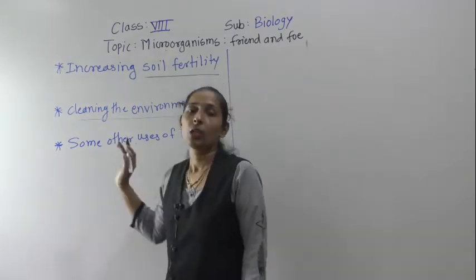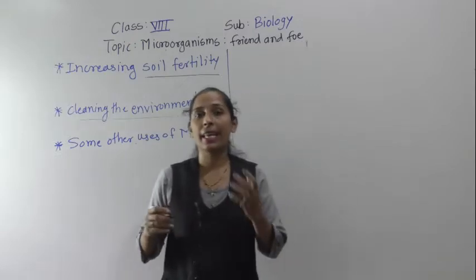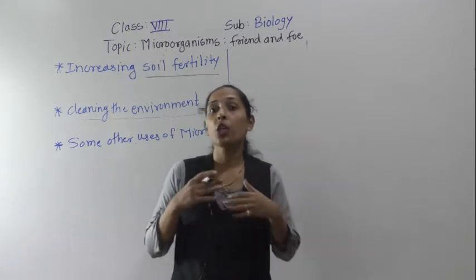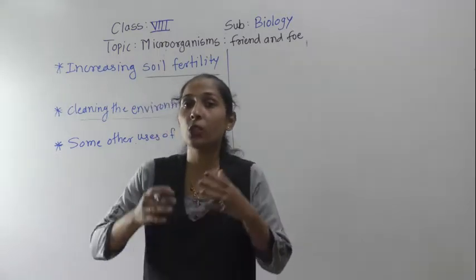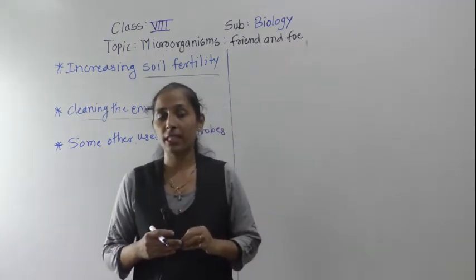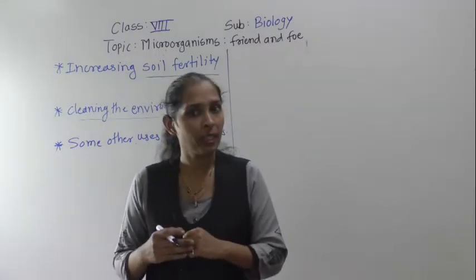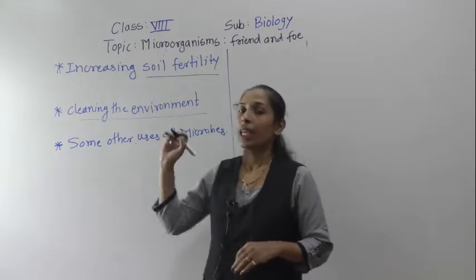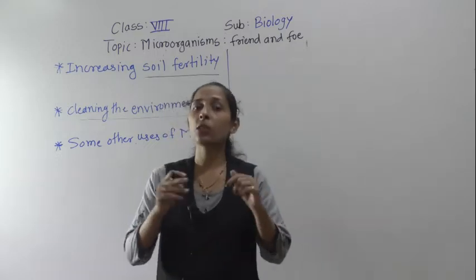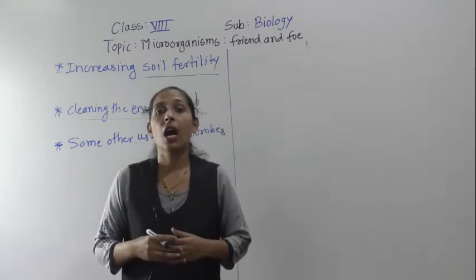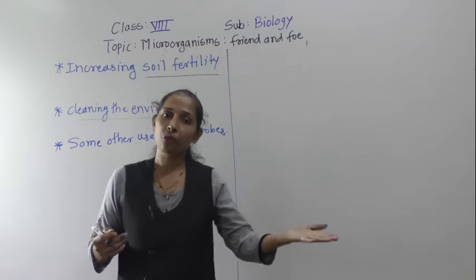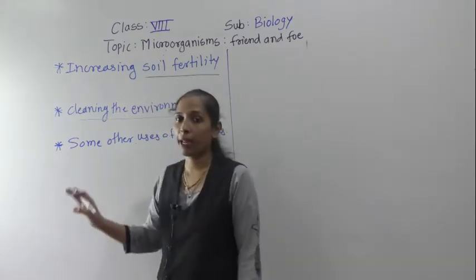There are also certain microbes that help in the leather and jute industries. As we saw previously, ruminants eat grass, and bacteria present in their digestive system help to digest cellulose. Also, certain bacteria are used to produce biogas, which can be used as a fuel. There are so many uses of microbes.